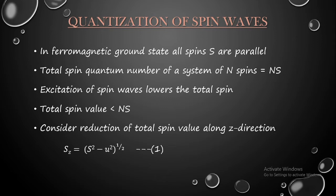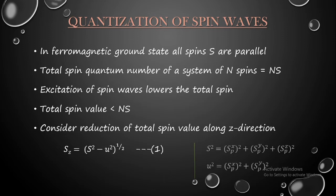In the previous class we derived that v = −iu, and that the total spin magnitude squared equals the sum of squares of its components: s² = Sx² + Sy² + Sz². We know Sx² + Sy² = u², so substituting gives s² = u² + Sz², which means s² − u² = Sz². Therefore Sz = √(s² − u²), consistent with equation 1.